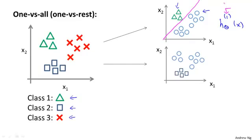Next, we do the same thing for class 2. We're going to take the squares and assign the squares as the positive class and assign everything else, the triangles and the crosses, as the negative class, and then we fit a second logistic regression classifier. We call this h of x superscript 2, where the superscript 2 denotes that we're now doing this treating the square class as the positive class, and maybe we get a classifier like that.